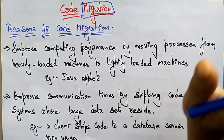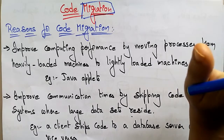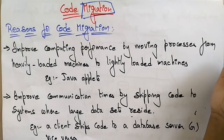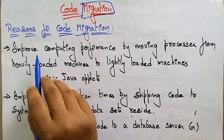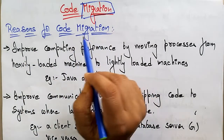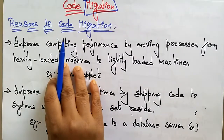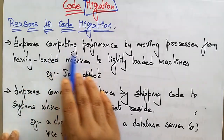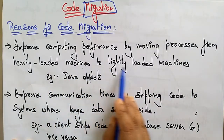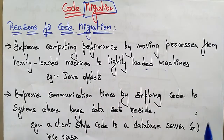Code migration means shifting the code from one place to another. Why are we using code migration and what is the reason behind it? The reason for code migration is that it improves computing performance by moving processes from heavily loaded machines to lightly loaded machines.